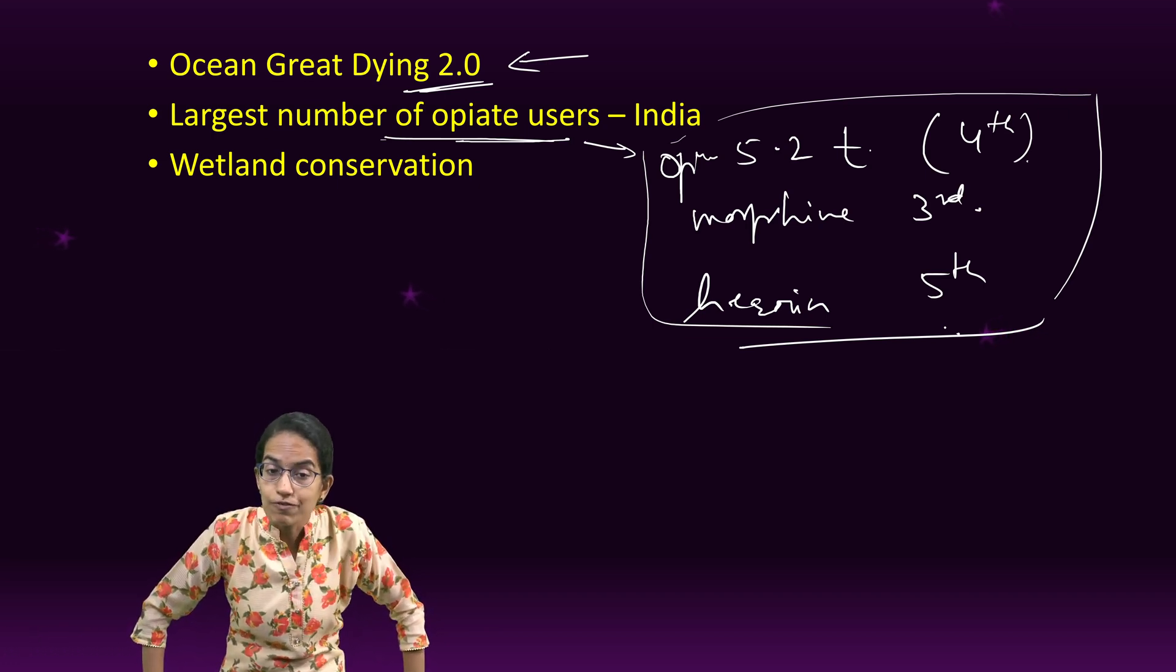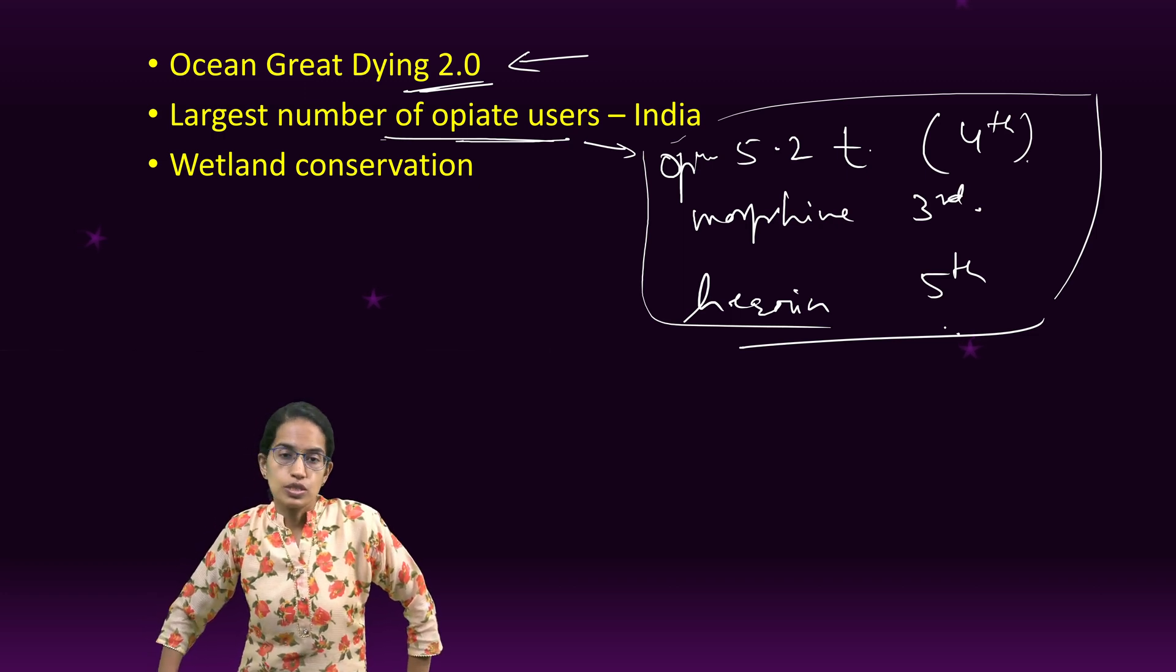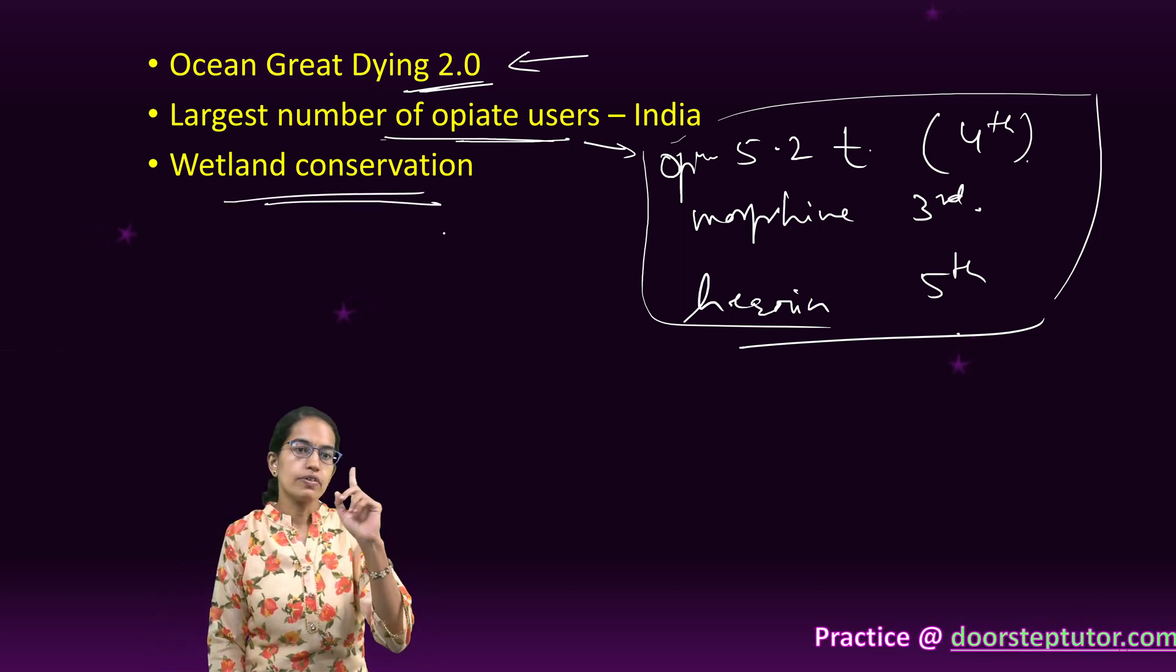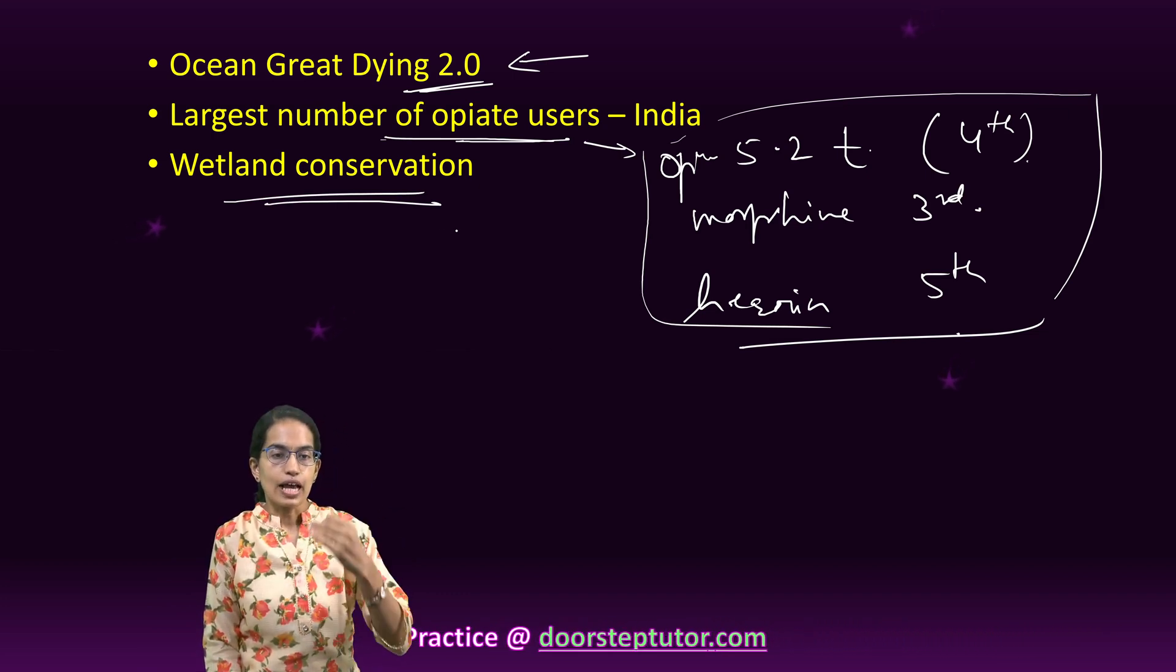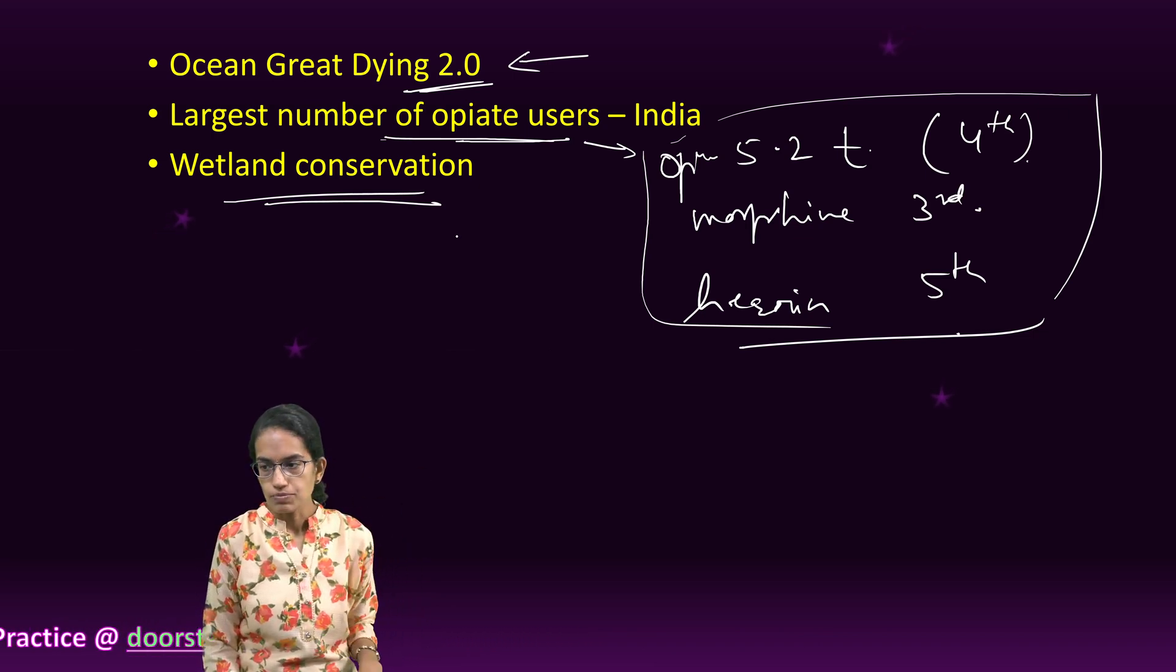So those are some of the reports where it has been brought that besides Afghanistan, India is one of the major centers where opiate users are extremely high. Another is on wetland conservation. We have covered separate lectures on different important wetlands under the national important centers for wetland conservation in India as well as the Ramsar Convention. So please make sure that you don't miss it.